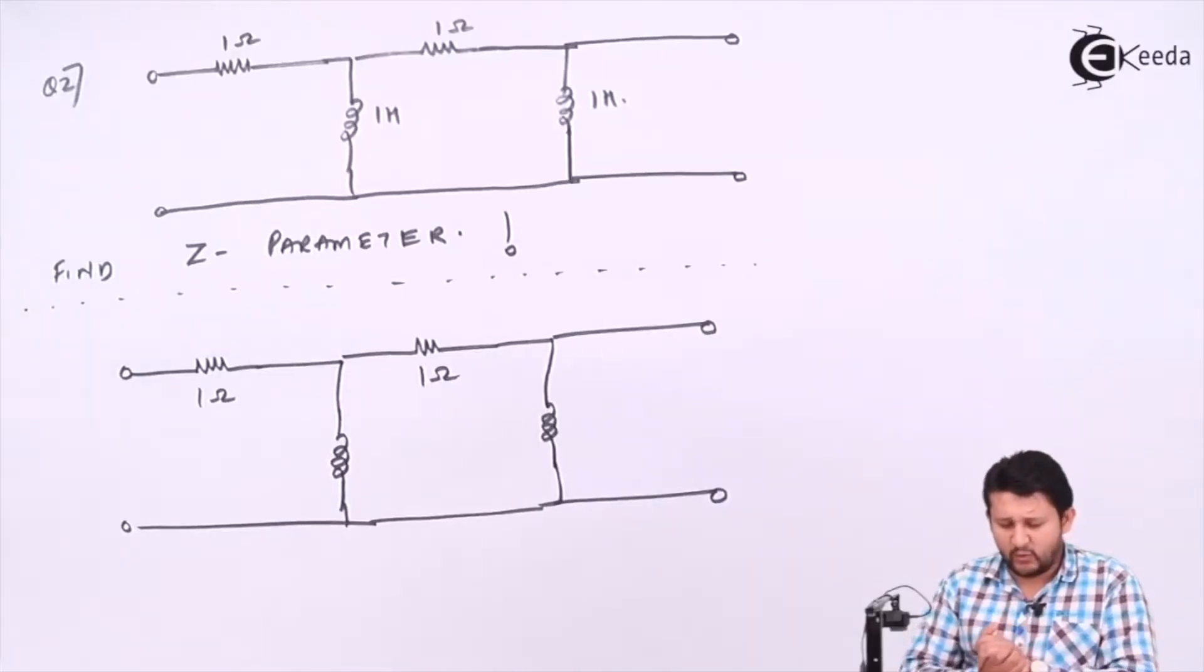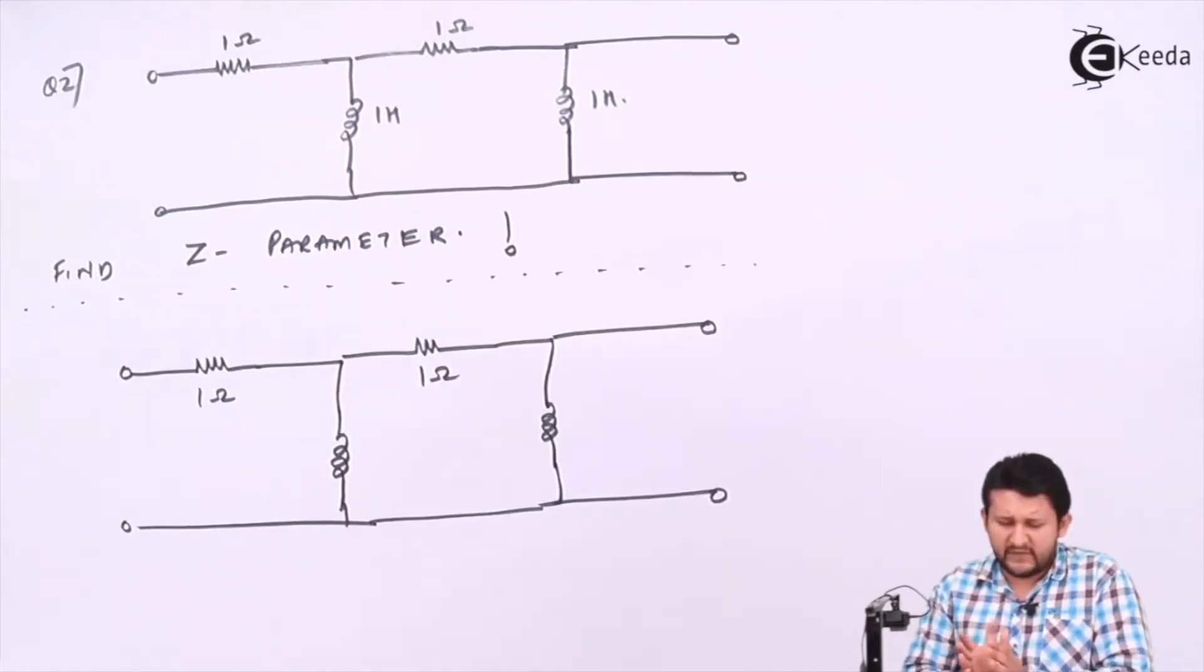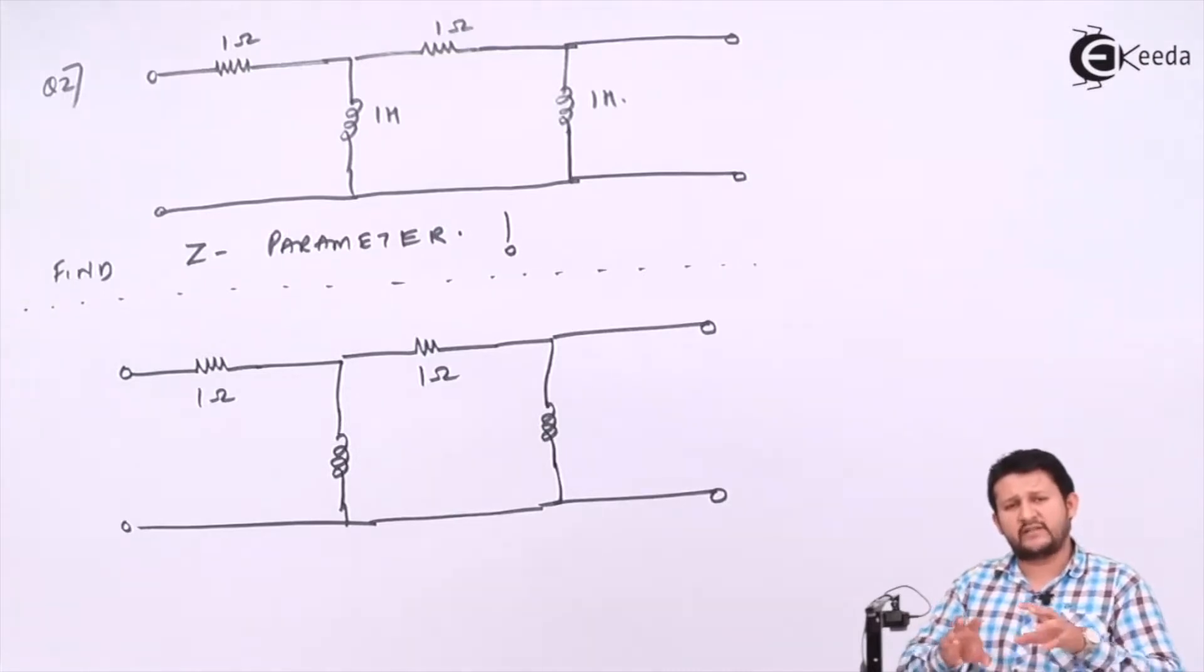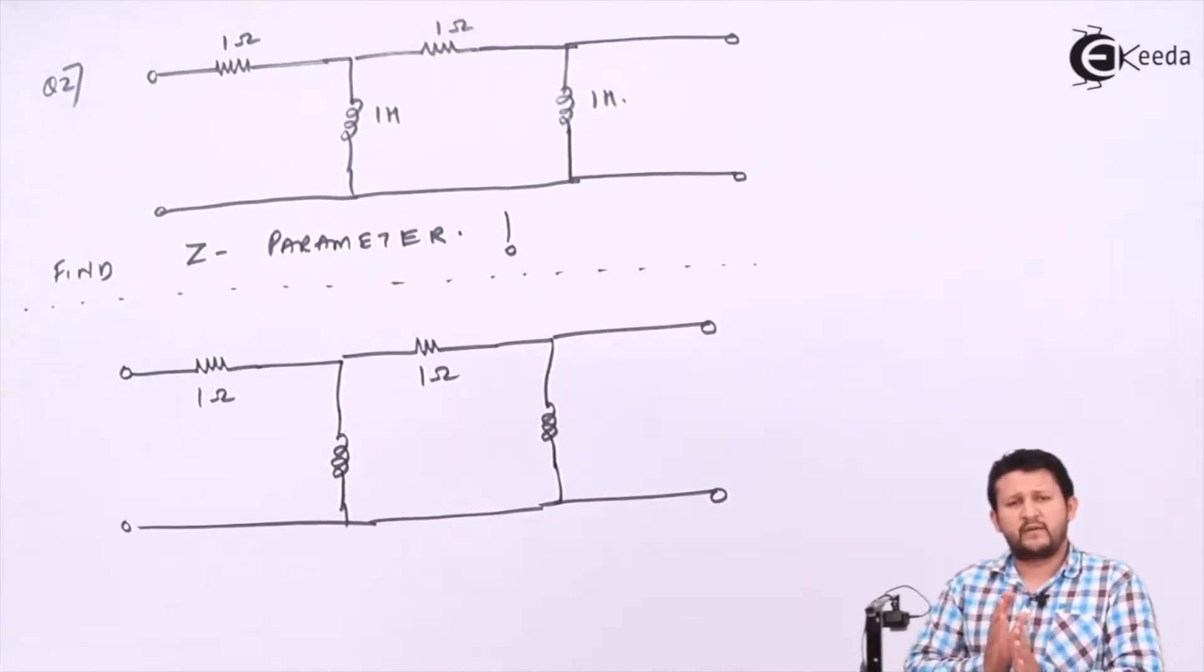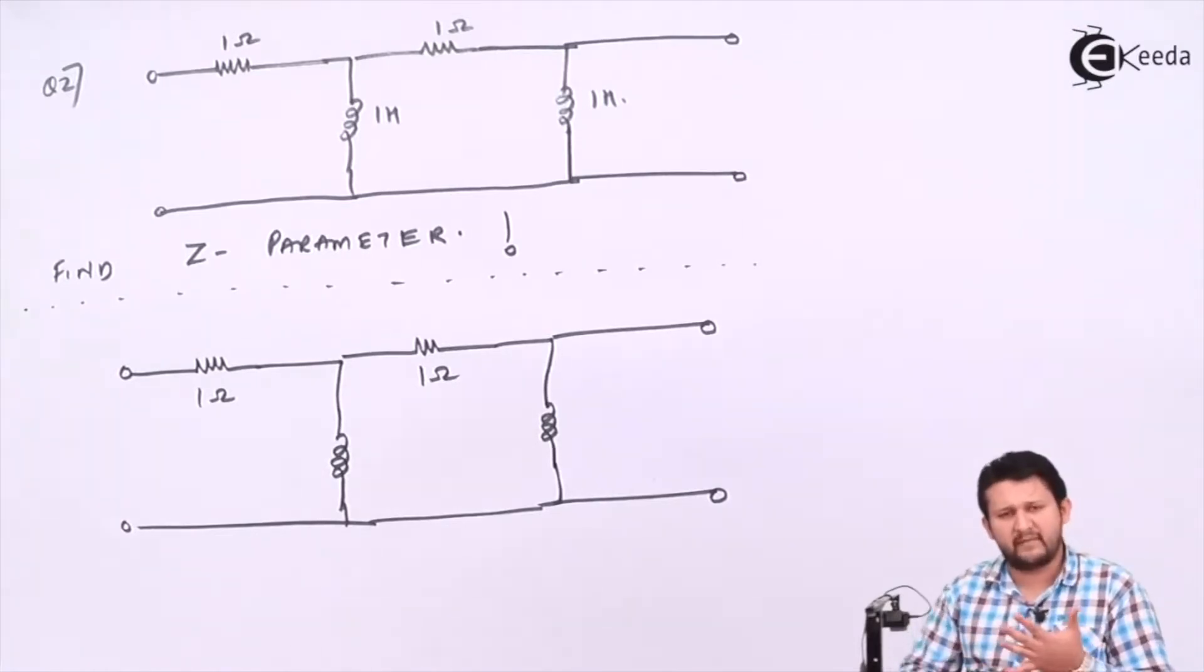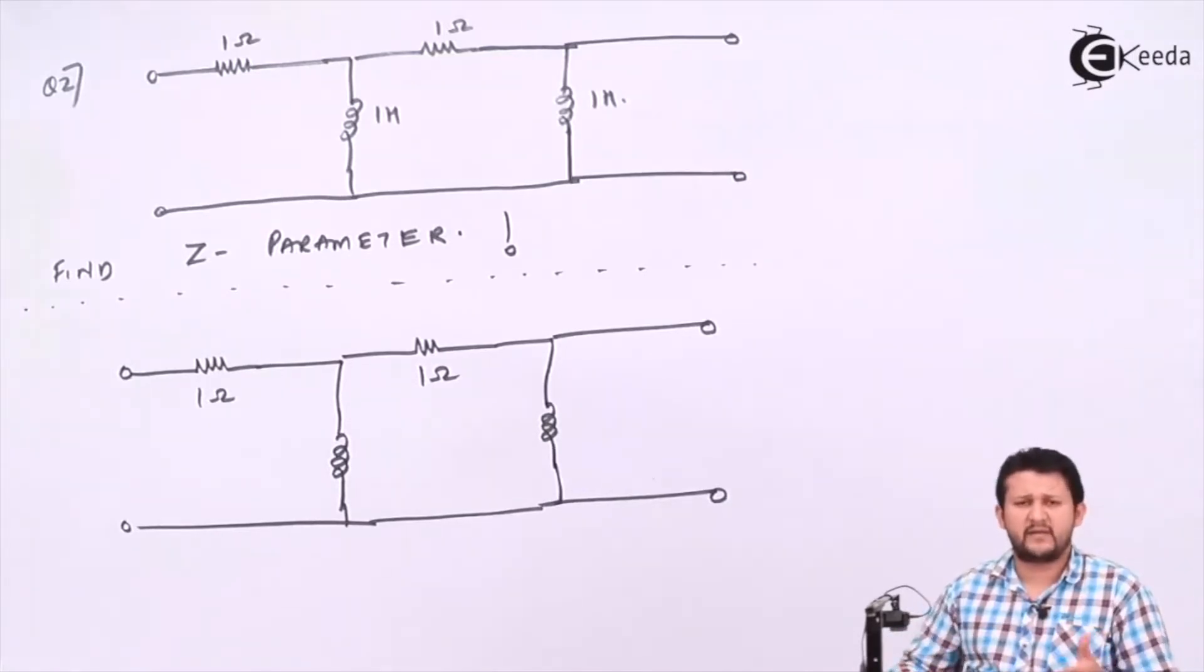So friends, let's have a look at sum number two. Again, you have to find the Z parameter. The difference between the earlier case and this case is that I have taken a combination of resistor and inductor to find the Z parameter. So please make sure when you have a resistor and inductor, you need to find any parameters—either Z parameters, ABCD parameters, H parameters, any parameters.